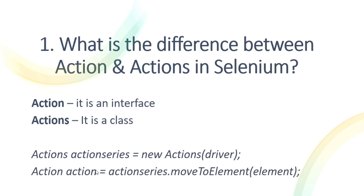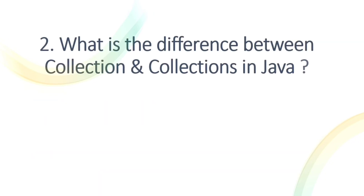The Action interface has a perform() method, which is used to finalize and execute the action. Just calling actionSeries.moveToElement(element) won't perform the mouse over — you must also call perform(). So: Action is the interface, Actions is the class, and perform() is called from the Action interface.